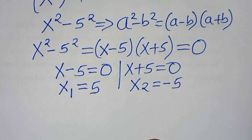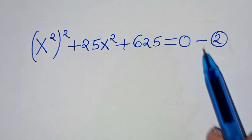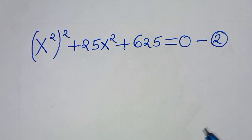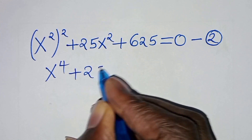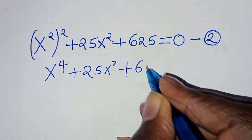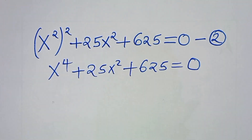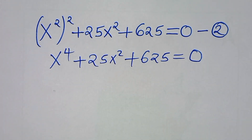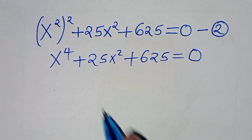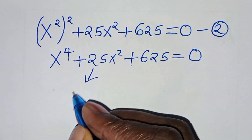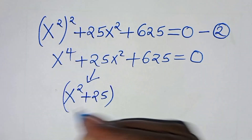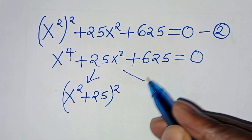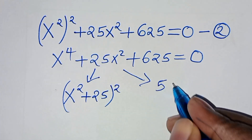Now we have the second equation. This is a polynomial of fourth degree: x to the power 4, plus 25x squared, plus 625, equals 0. Now when you look at this polynomial, there is something we can note: we have x squared plus 25 squared, and also something like 5x squared.